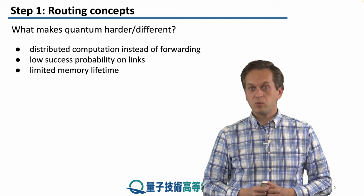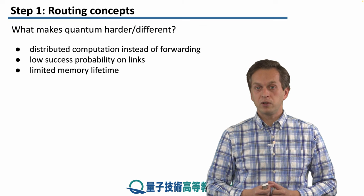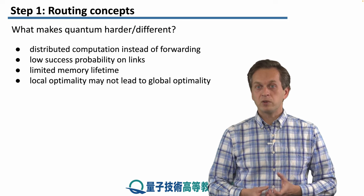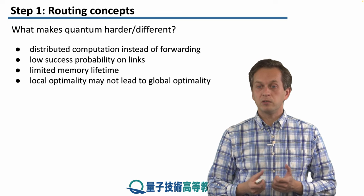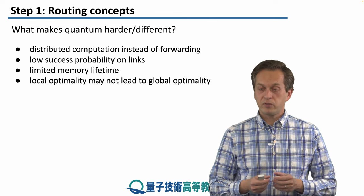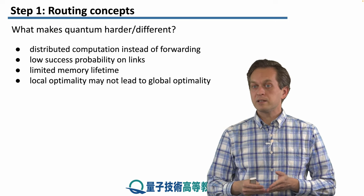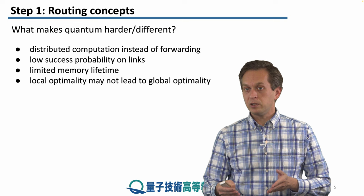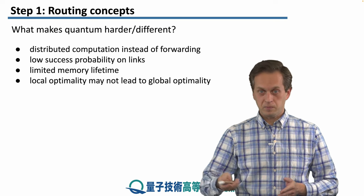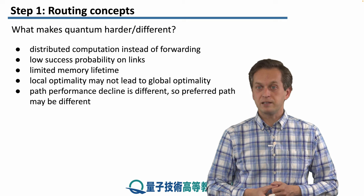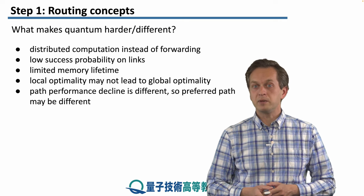We also have another complication in the form of the limited lifetime of quantum memories. And also, finding the local optimum may not always lead to the global optimum. So we may find what's the best link connected to A, but that doesn't tell us whether that link should be included in the full path going from A to B.